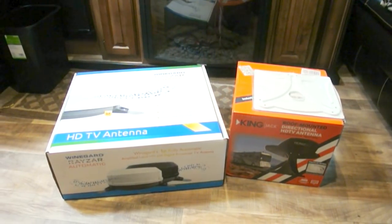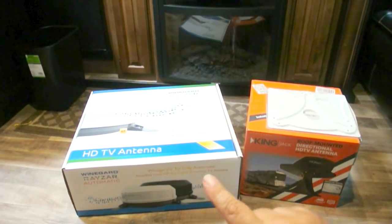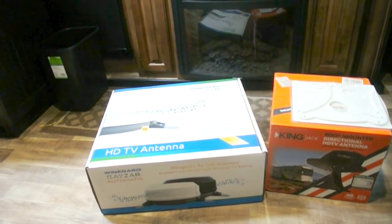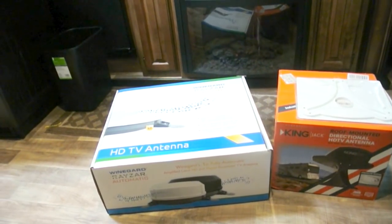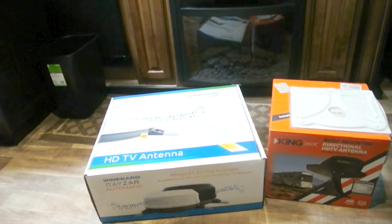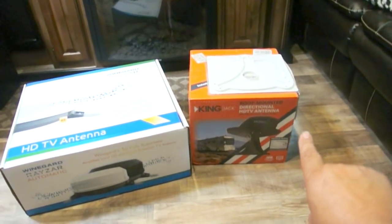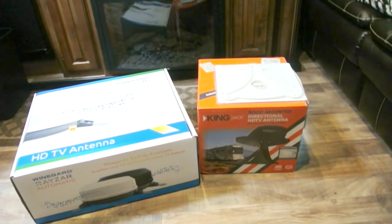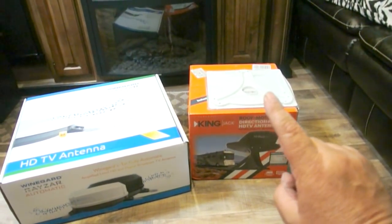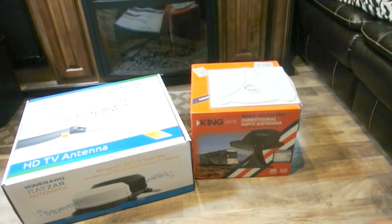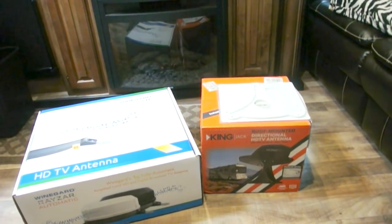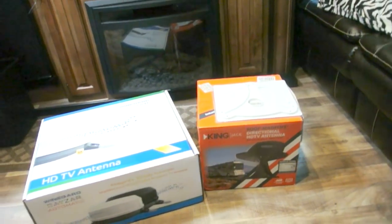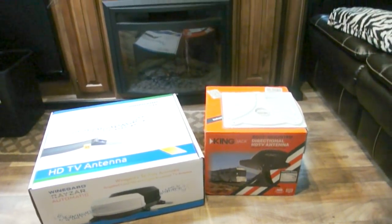The first one is this Winegard Rayzar Automatic HD TV antenna, and it is around $300. The second one is a King roof-mounted directional HD TV antenna. It's about $120. Then I bought the additional patch plate to cover up the existing antenna holes, and that was another $30 or so. I'm probably going to sell the one I don't use.